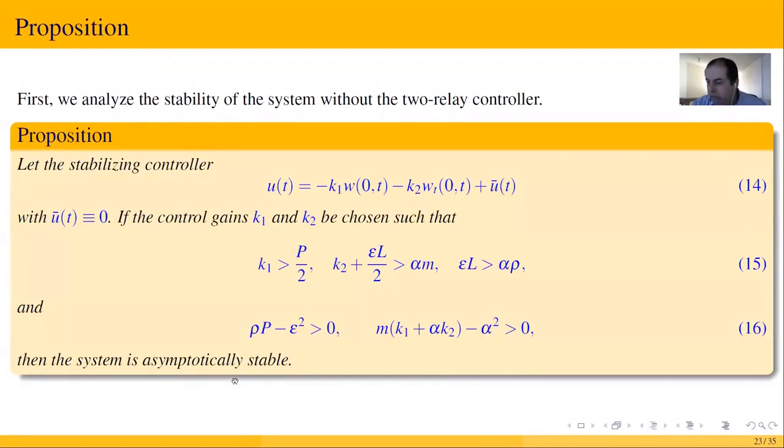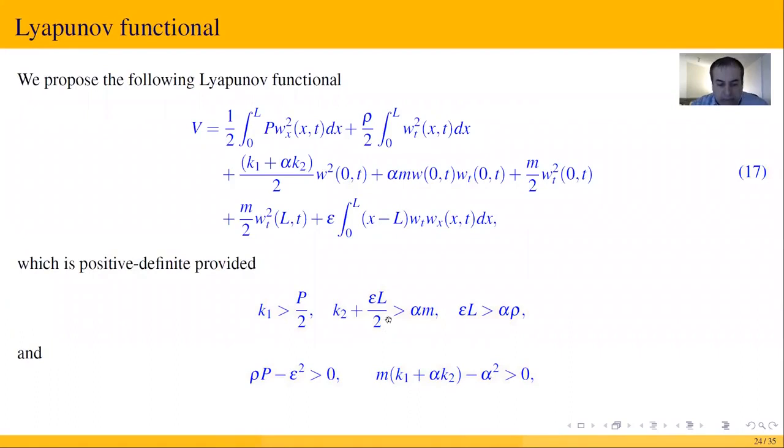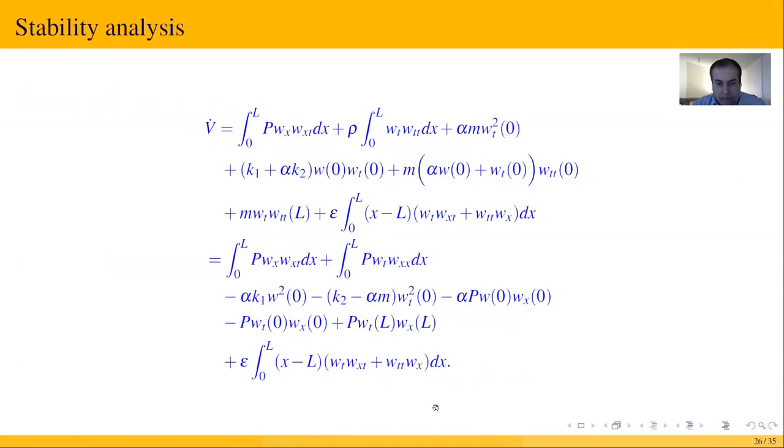Now, for simplicity, we add a stability controller given in equation 14, providing inequalities 15 hold. The stability analysis is made without the two-relay controller by proposing the Lyapunov functional satisfying the condition below. After developing the time derivative along the solution of the closed-loop system, we finally have these conditions.